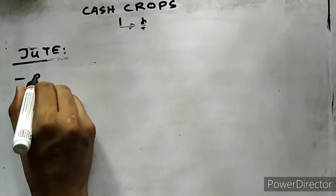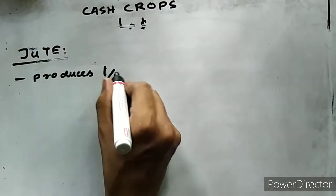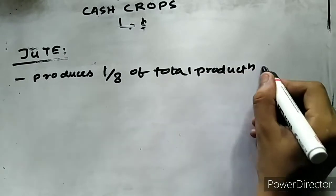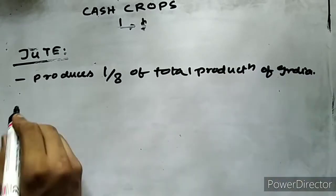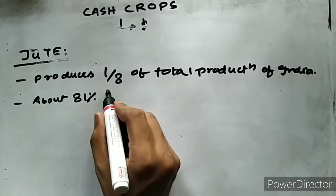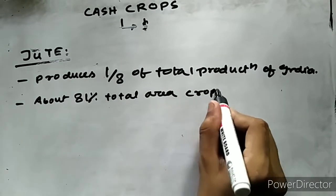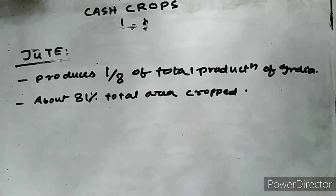Assam now produces about one-eighth of the total jute production of the country. About 81% of the total area devoted to jute in the region is in Assam. This crop contributes largely to the economy of Assam along with tea, oil, and timber.